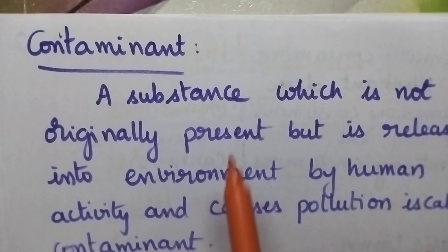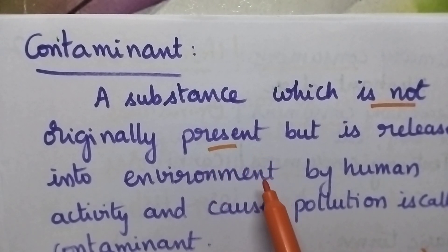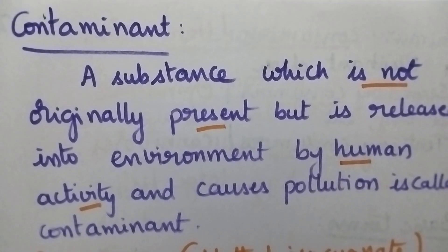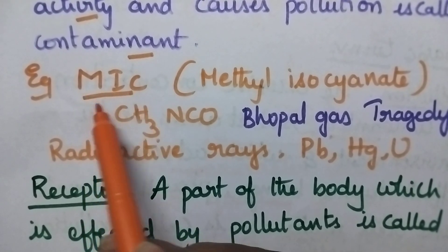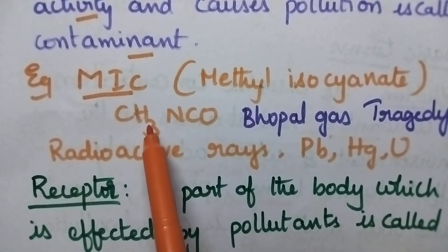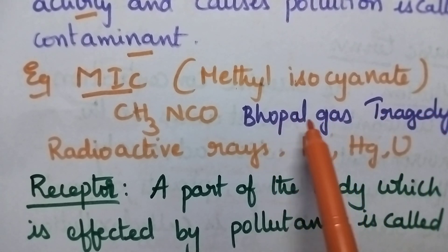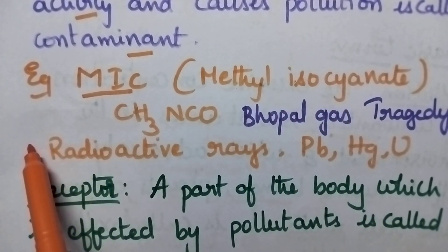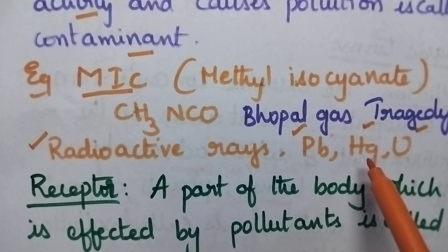Contaminant means the substance is not originally present in the atmosphere, but suddenly it is released into the atmosphere because of human activities and shows adverse effects — that is called a contaminant. The best example is MIC, which stands for methyl isocyanate (CH₃NCO). This MIC gas is responsible for the Bhopal gas tragedy. Along with MIC, radioactive rays, and if lead, mercury, or uranium are present in the environment, they also account for contamination.